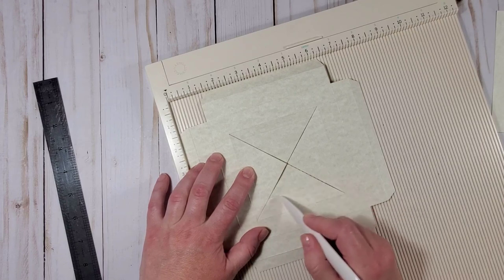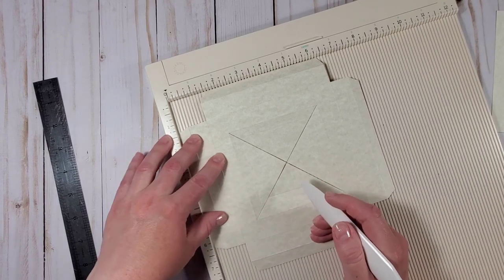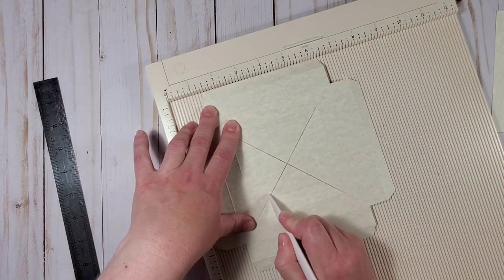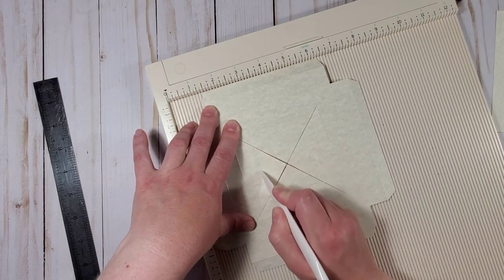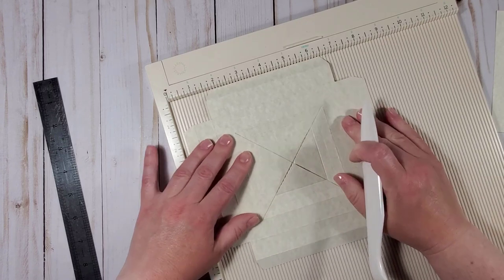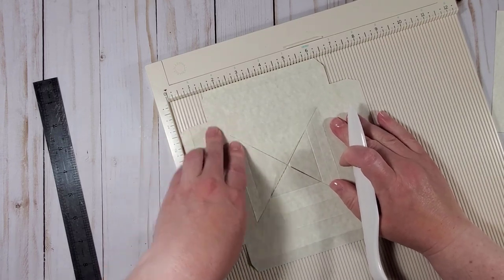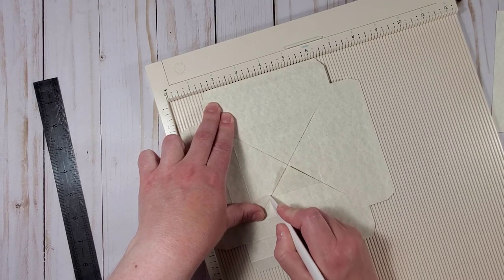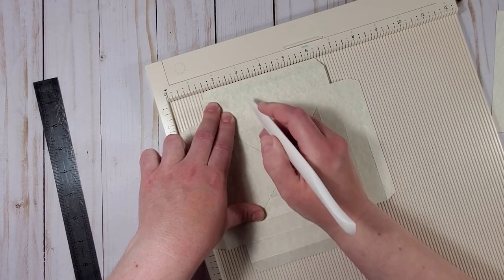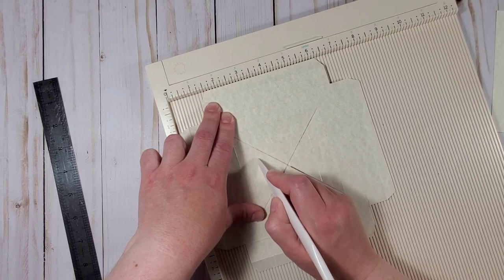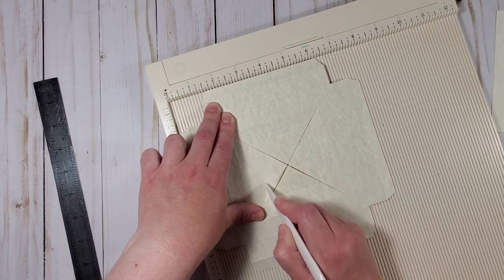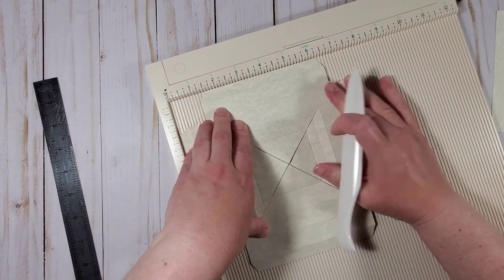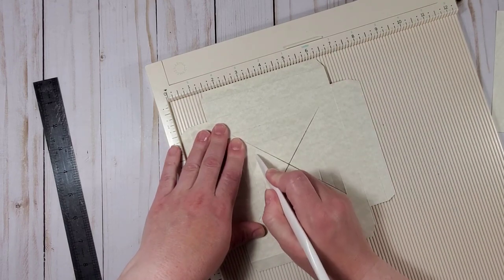So right now when I have one of the lines scored on the cardstock I can use that line as my guide and keep on adding three more score lines while every time I create another side of the square in the middle and this is what we need.